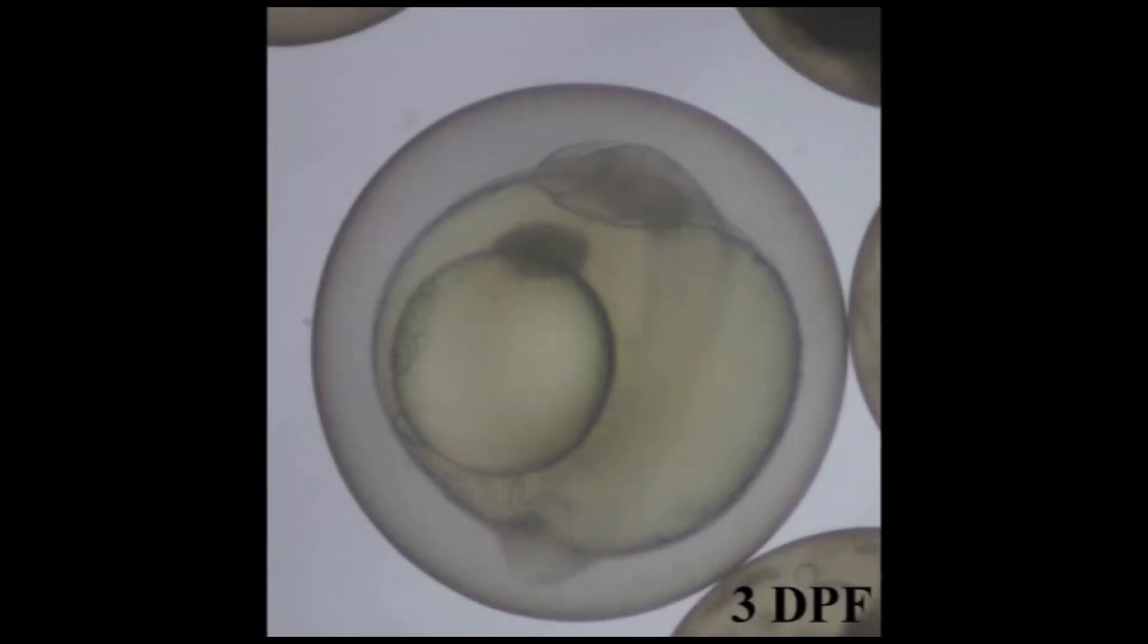At about three to four days post-fertilization, the developing embryo is wrapping around the yolk and oil droplet. The head and eyes become distinguishable, shown at the top of the yolk sac.